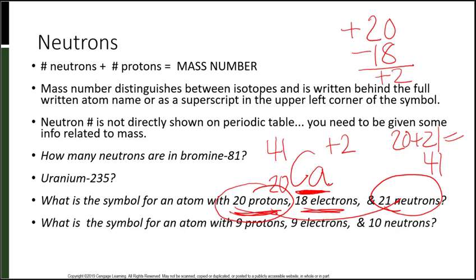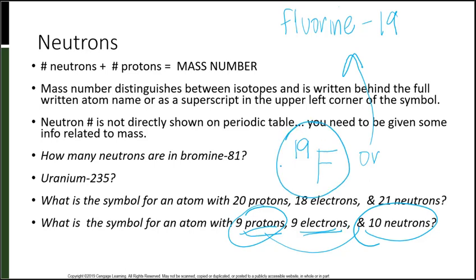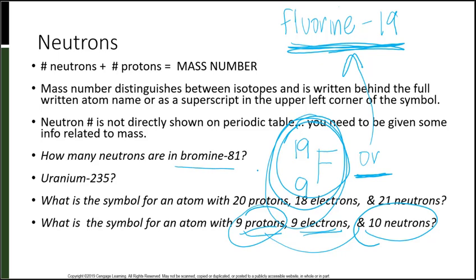Write the symbol for the atom with 9 protons, 9 electrons, and 10 neutrons. Nine positives and 9 negatives means it's neutral. It's fluorine, F. Nine protons plus 10 neutrons gives a mass of 19 — so put 19 in the upper left corner. You can write ¹⁹F, or since it's neutral, write it as fluorine-19.